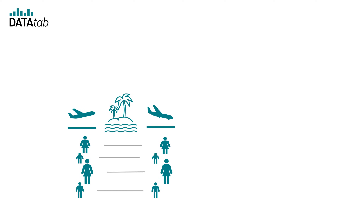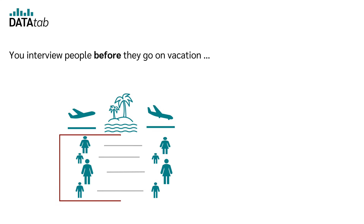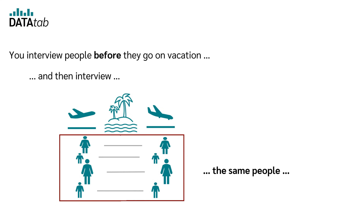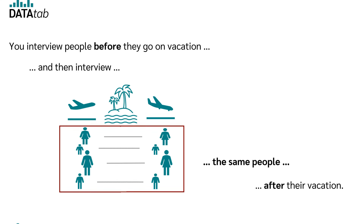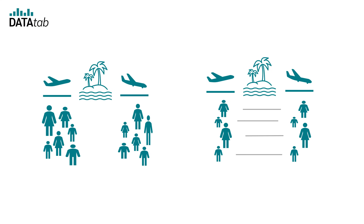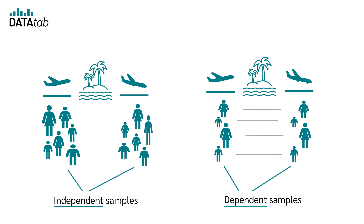The second possibility, and also the better one, is you interview people before they go on vacation and then you ask the same people again after they return from their vacation. In this case, you would have a dependent sample, so the measured values are always available in pairs. Therefore, if the people have nothing to do with each other, you have an independent sample. If the people you ask before and after are the same and you therefore have pairs, you call it a dependent sample.